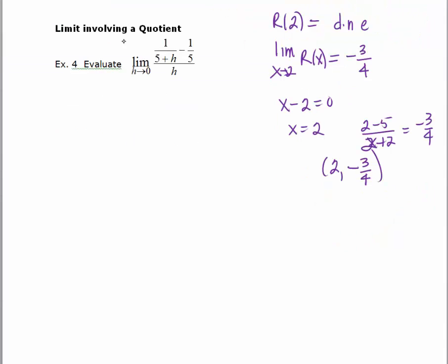Let's look at another example involving a quotient. We're going to evaluate the limit as h approaches 0 of 1 over 5 plus h minus 1 fifth over h. We will start by direct substitution. So we'll have 1 over 5 plus 0 minus 1 over 5 all over 0 which gives us 0 over 0.